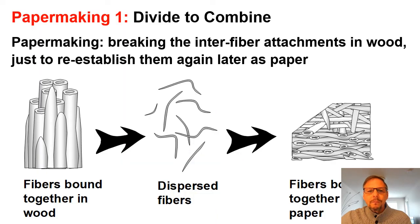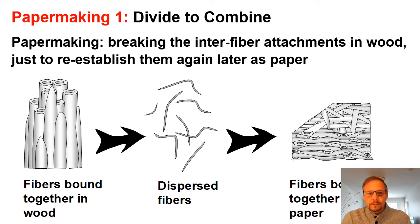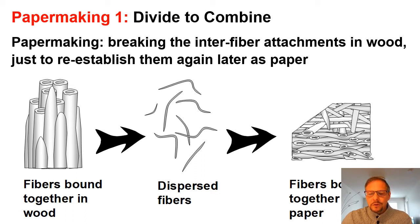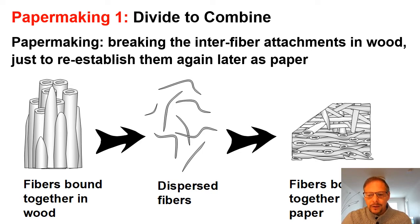So far, probably you have learned that in papermaking the idea is to take fibers from wood or from plants, to disperse them in aqueous suspension, and then to put them back together into a paper structure as the one that you see on the far right. This is the idea of divide and combine — use fibers, split them, divide them, and then put them back together in a dry piece of paper.